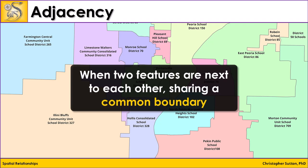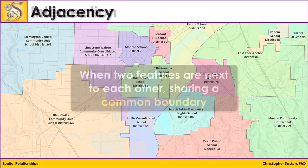Adjacency occurs when features are next to each other, sharing a common boundary. In GIS, adjacency is important for understanding neighborhood relationships — for example, if you have two cities that share a common border.